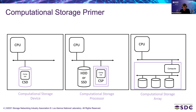There are three basic architectures for computational storage. On the left is the computational storage device — a processor effectively on a drive, also called active storage. This is super beneficial whenever you can semantically interpret the data on the drive. But it's difficult to do with a block device, where any particular block may have an extent of data, or maybe a metadata block with pointers into a B-tree.